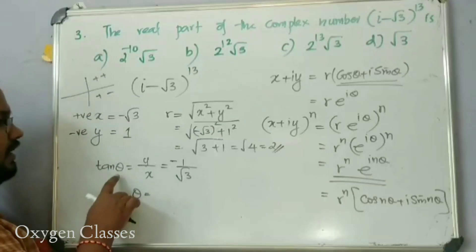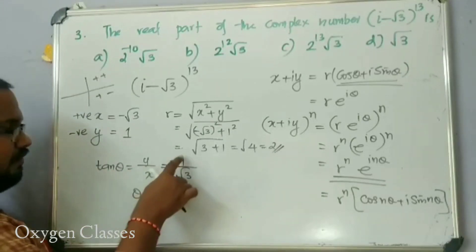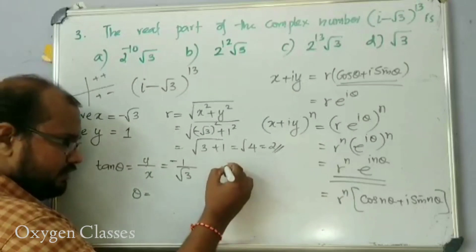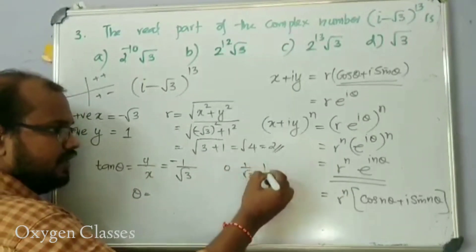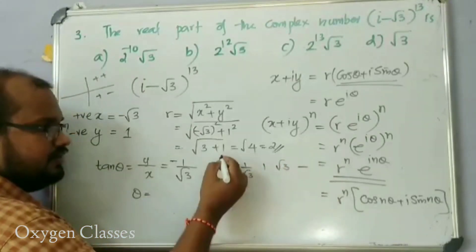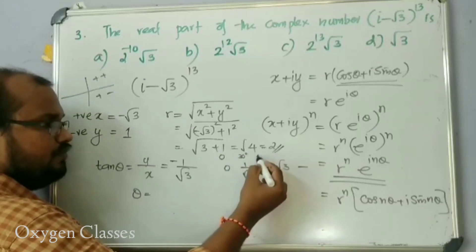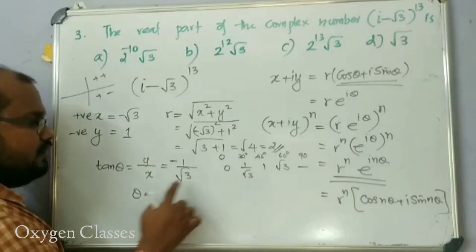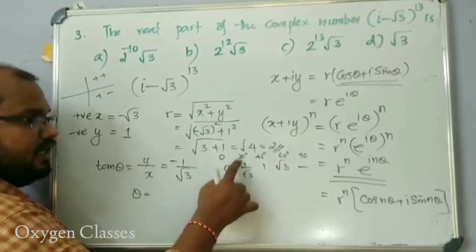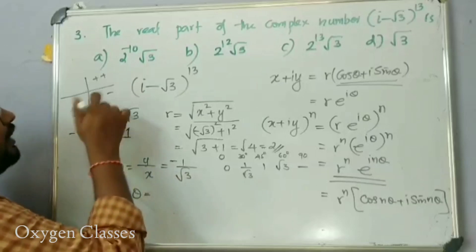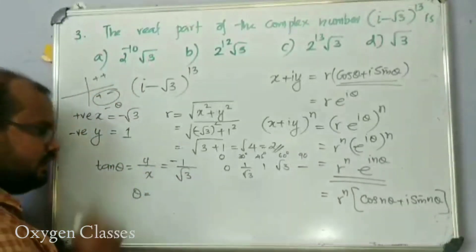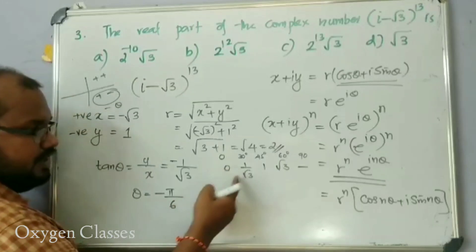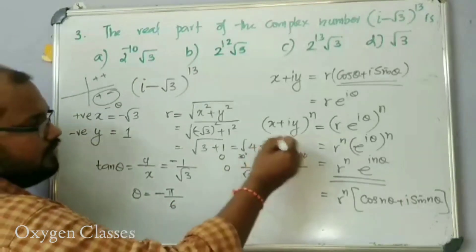The angle theta is found using the tangent value. From the value table: tan of 30 degrees (pi by 6) equals 1 by root 3. Since we are in the fourth quadrant, the angle is negative: theta equals minus 5 pi by 6, giving us the polar angle.